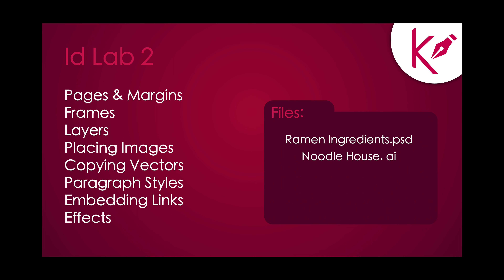Hi class, welcome to InDesign Lab 2. You're going to need two files to start today: the Ramen Ingredients Photoshop document and the Noodle House Illustrator document. We'll create an all-new InDesign document from scratch using assets from those two files. Today we're going to go over pages and margins, frames, layers, placing images into a document, copying vectors into a document, paragraph styles, embedding links, and effects.